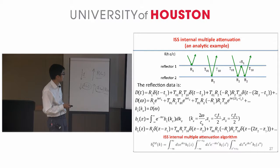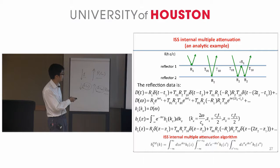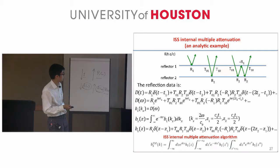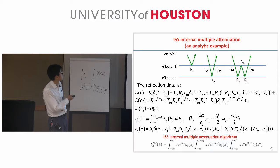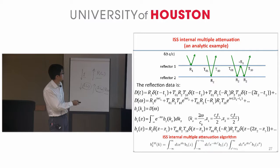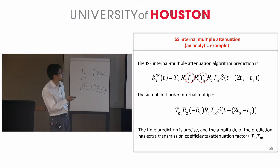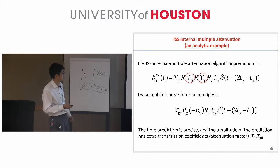We use B1, which is the data, and put it into the internal multiple attenuation algorithm. Without any subsurface information, the algorithm gives a prediction of all internal multiples with correct time and approximate amplitude. For this data, the first order internal multiple predicted is compared with the actual internal multiple — the third event. The prediction has two extra transmission coefficients, shown in the red circle. That difference between the prediction and the actual internal multiple is the attenuation factor — the difference between attenuation and elimination.